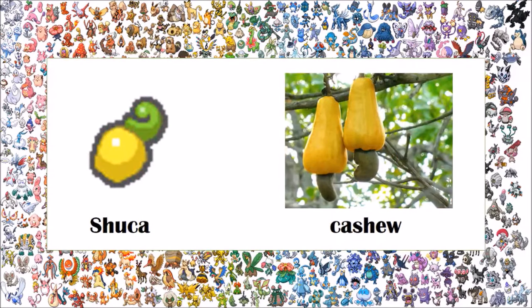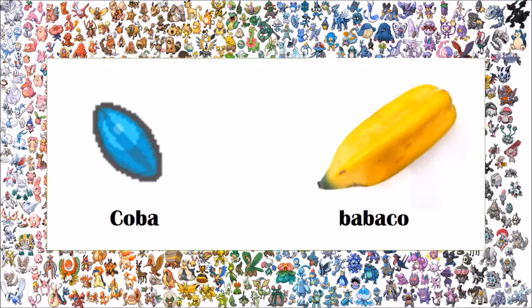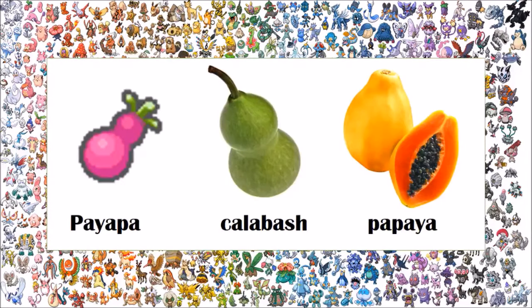The Shuca berry is based on the cashew, which, despite being known as a nut, is actually a fruit. The Coba berry is based on the babaco. The Payapa berry, while being based on the calabash in Japanese, is named after the papaya in English. The papaya, of course, we saw earlier, because it also inspired the Yapa berry in Pokemon games — so the papaya inspired two Pokemon fruits. But the Payapa berry is also inspired by the calabash in Japanese.